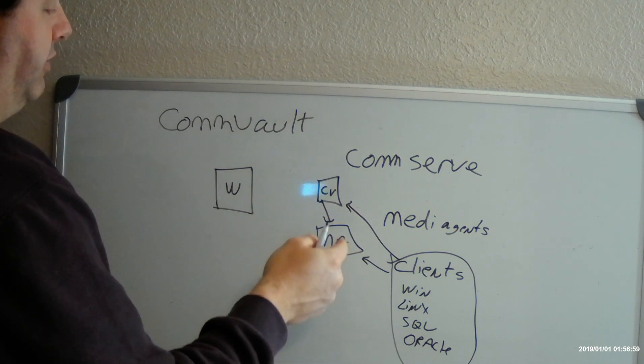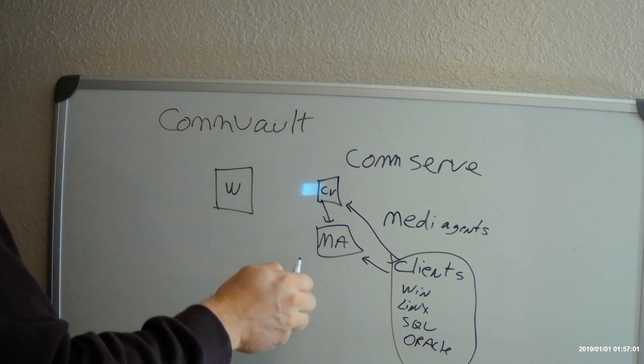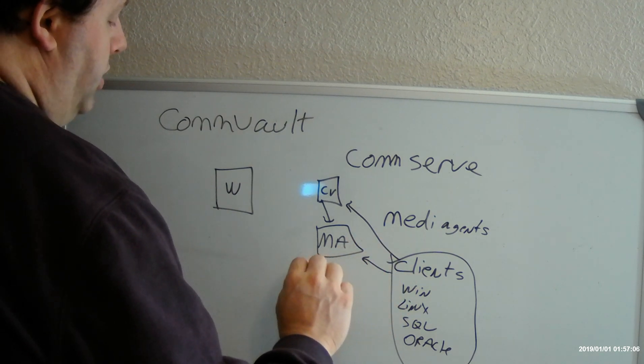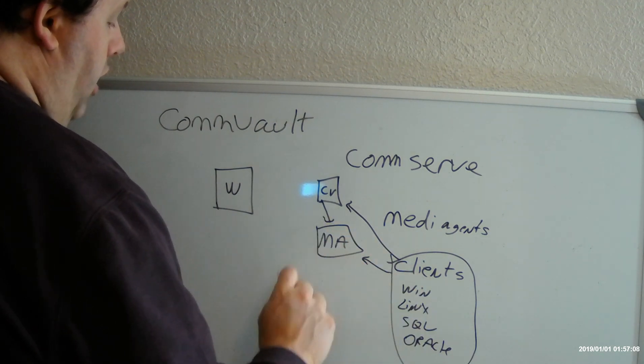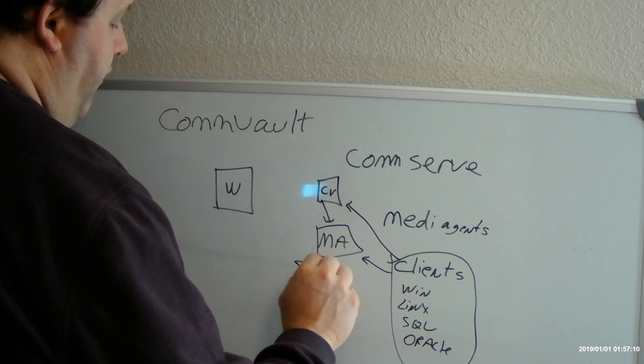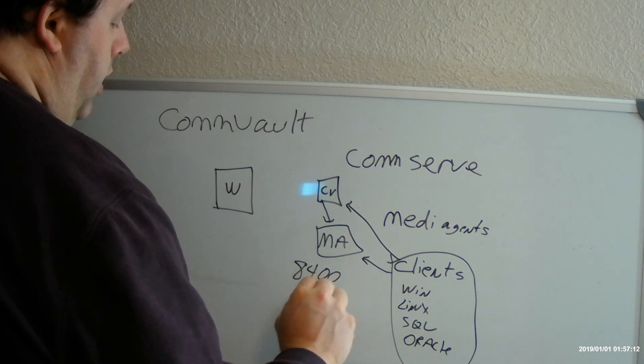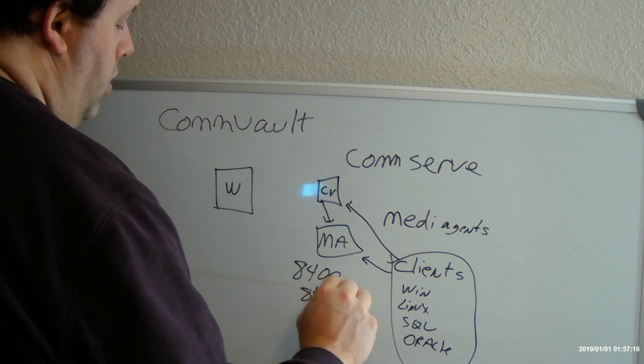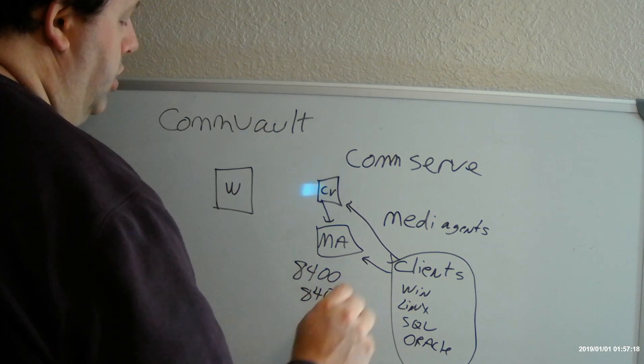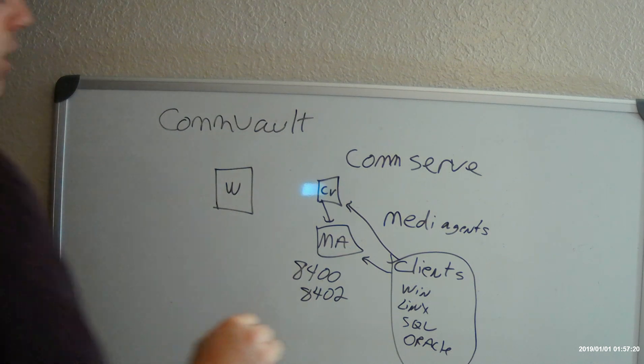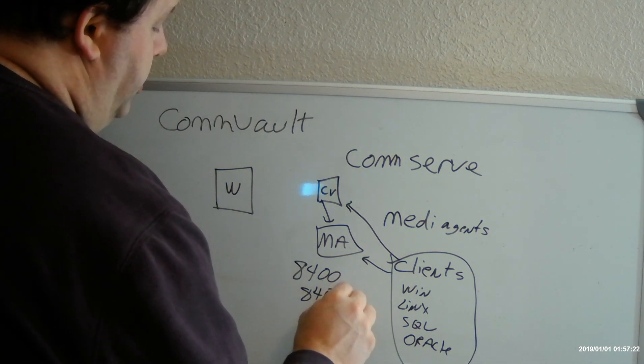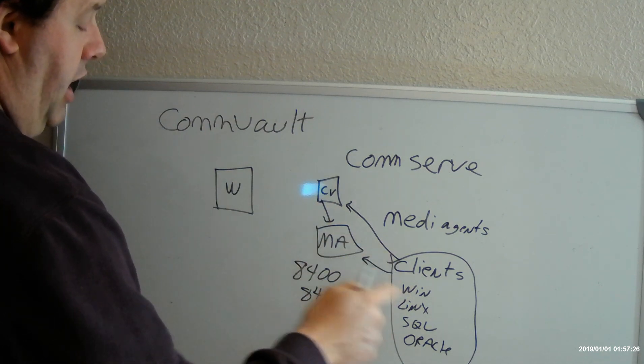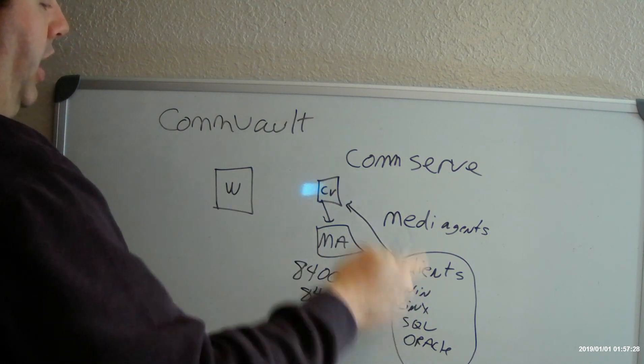They usually talk over, the ports by default are 8400 and 8402. These are the two ports that the media agent, clients, and the commserve talk to one another over.